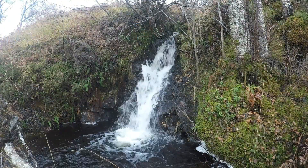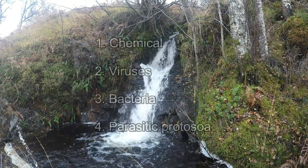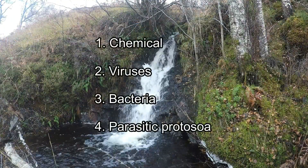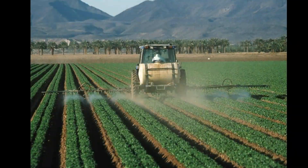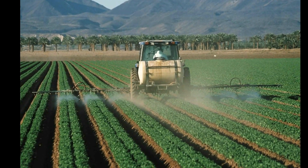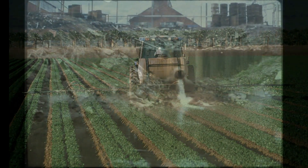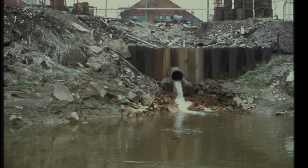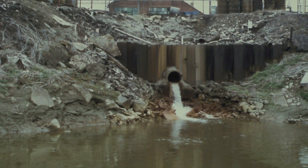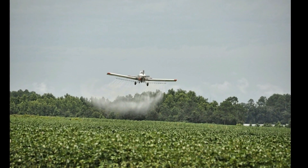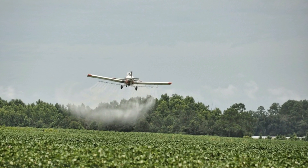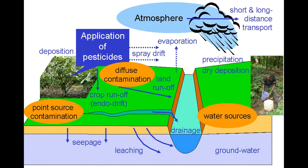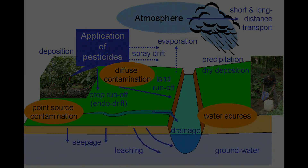There are four main groups of contaminants you can find in water: chemicals, viruses, bacteria, and parasitic protozoa. Chemical contaminants can include pesticides, herbicides, heavy metals, and radioactive waste. Unfortunately, toxic chemical contaminants are becoming increasingly common all around the world and they're incredibly difficult to remove from the water. In the case of pesticides, they can be carried up into the atmosphere and come down in the rain miles away from where they were sprayed.